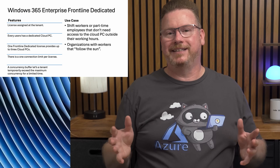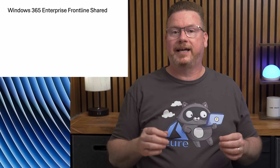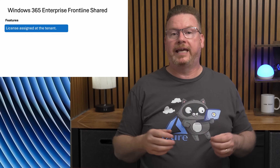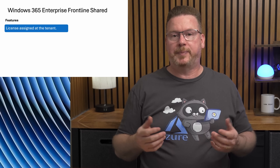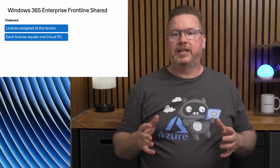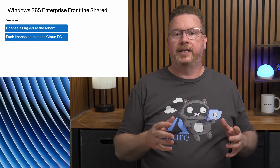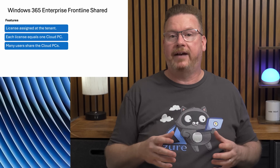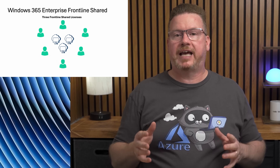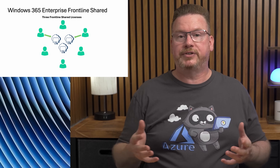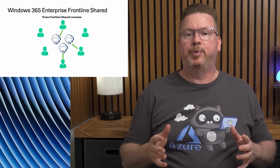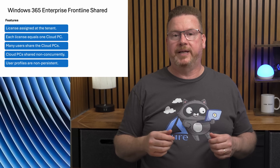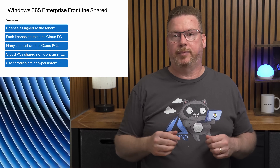That brings us to Windows 365 Enterprise Frontline in shared mode. Just like dedicated mode, the license is applied at the tenant level. However, users in shared mode don't get a dedicated cloud PC — as the name suggests, they share cloud PCs. Each license in shared mode equals one cloud PC and one concurrent connection. If we have 100 Frontline shared mode licenses, we could have up to 100 users connected at once. Users are assigned by group membership — if 400 users are in that group, only 100 could access at a time.